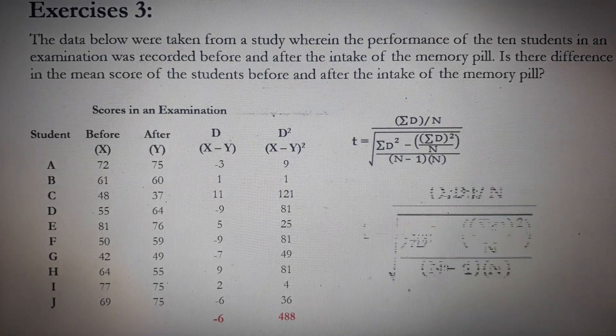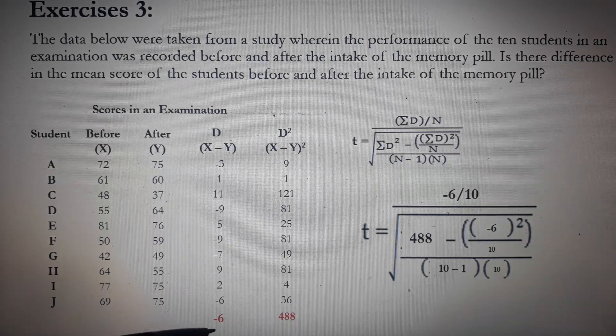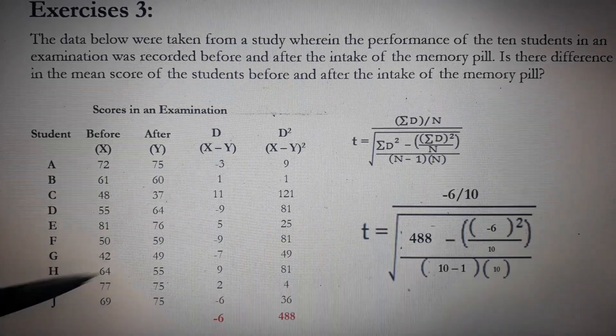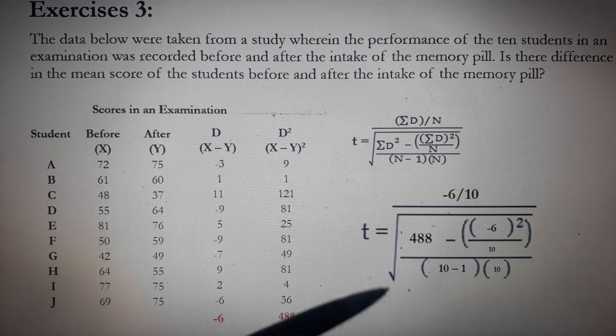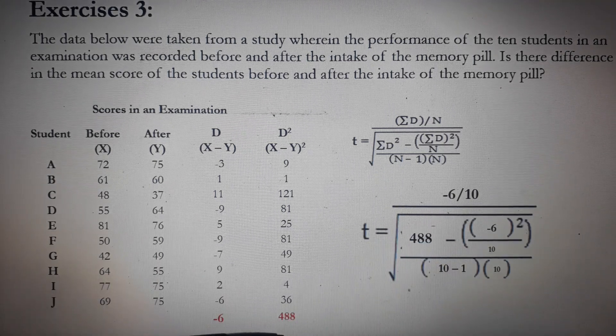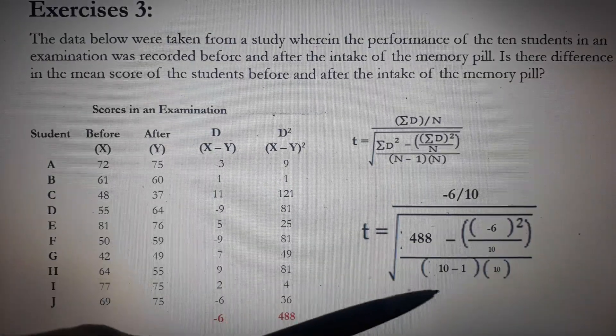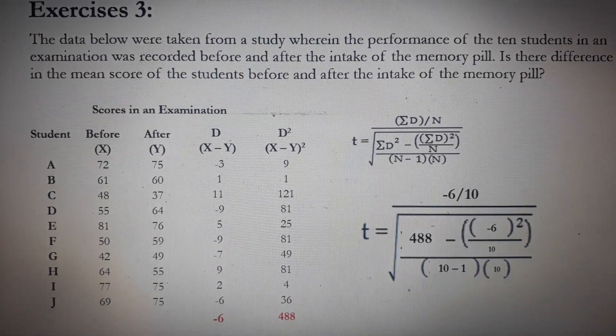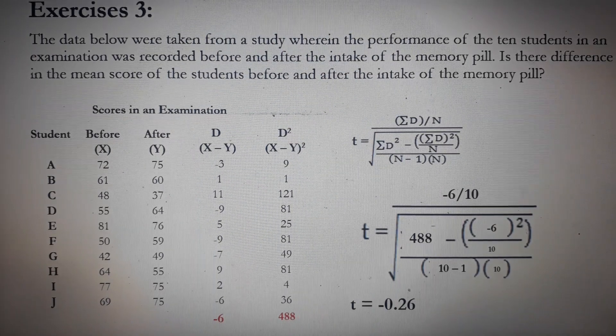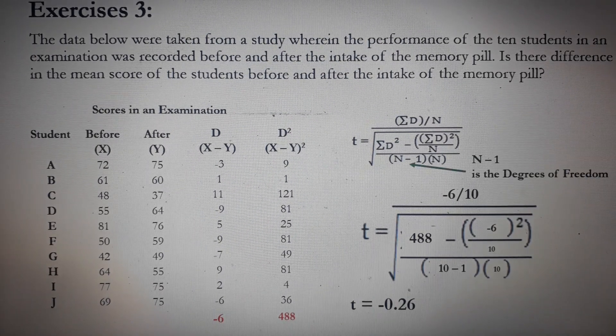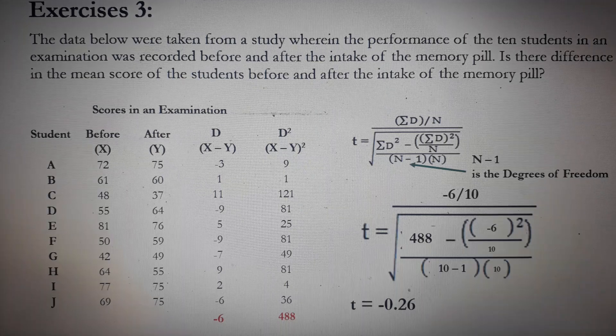By substitution, we have T is equal to negative 6 over 10. Negative 6 came from the sum of D, and the 10 came from the number of respondents, the number of students. All over the square root of 488 came from the sum of D squared minus negative 6, again, but you have to square, over 10. All over 10 minus 1 times 10. And by calculation, the value of T is negative 0.26. Notice that the N minus 1 is the degrees of freedom, which will be used later in finding the critical level.